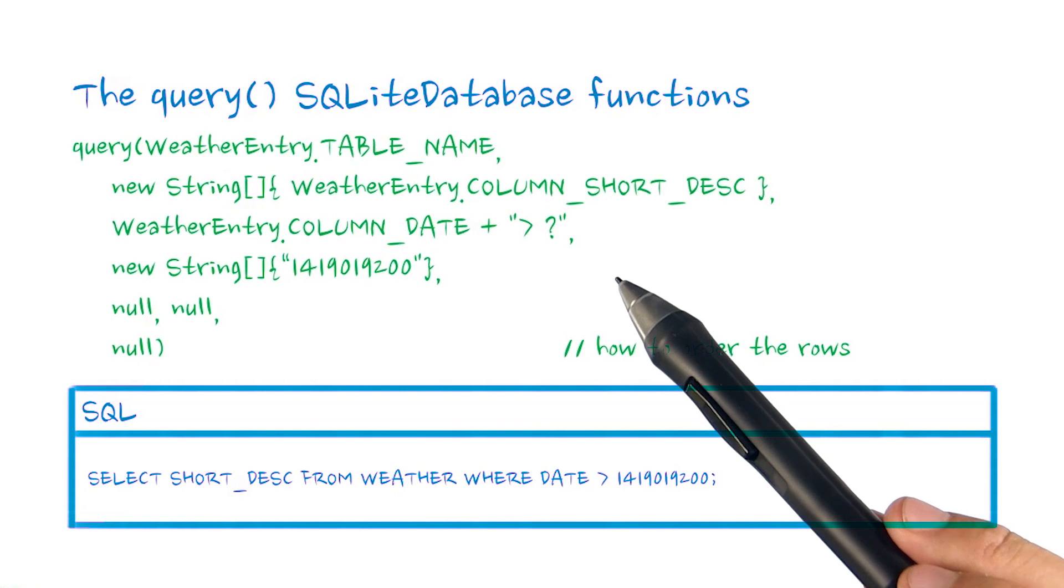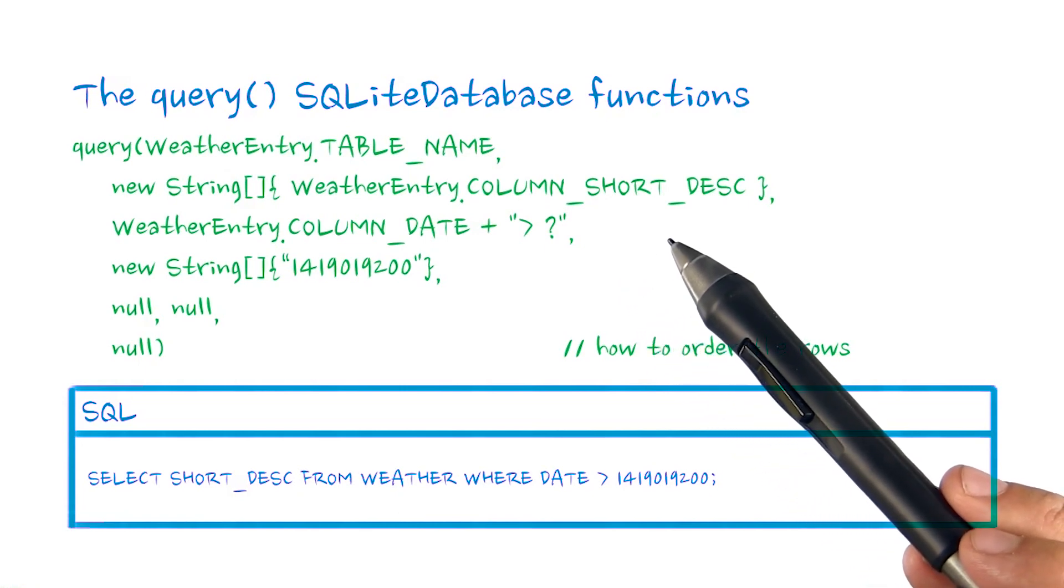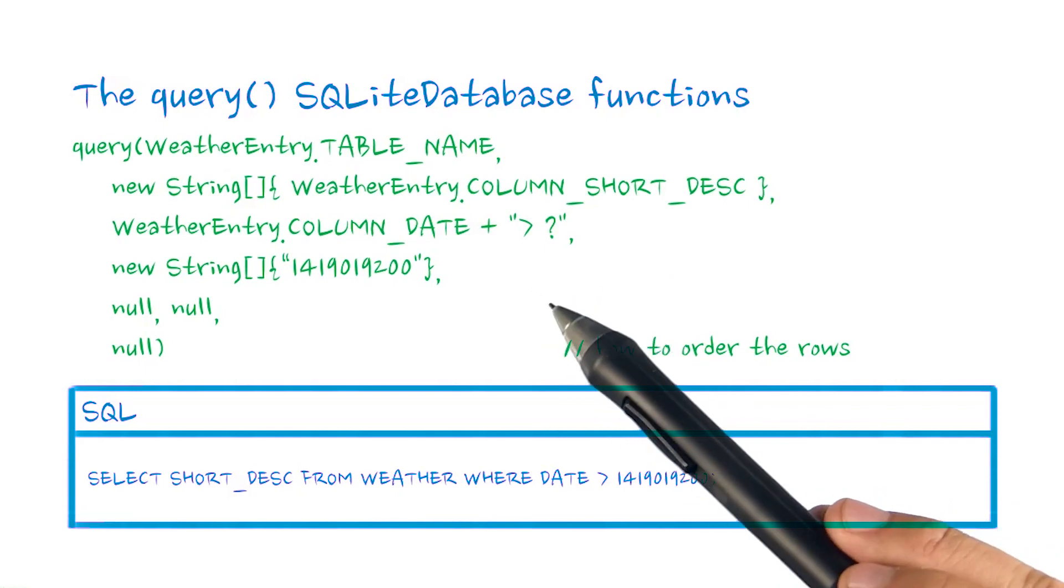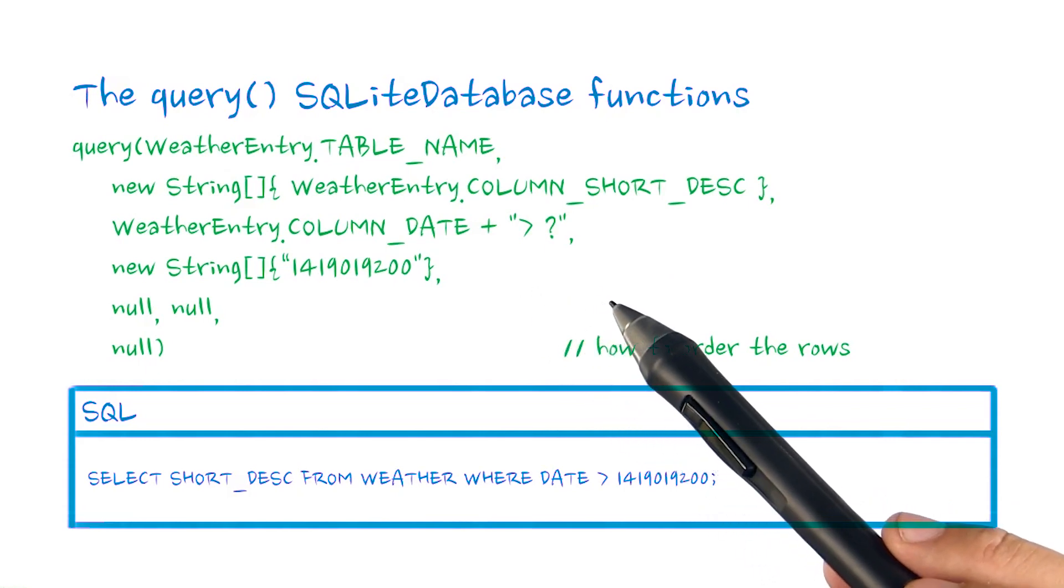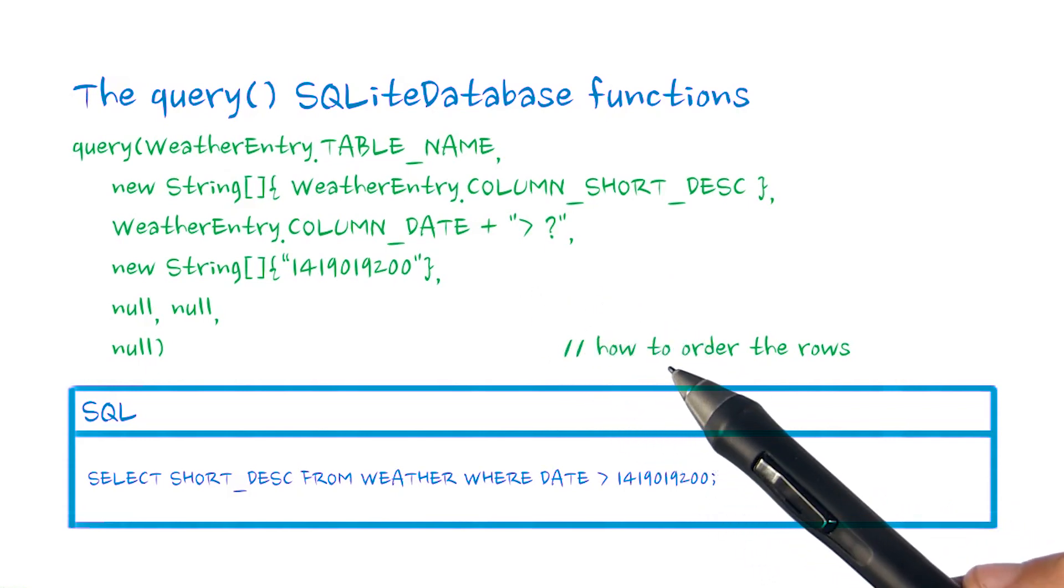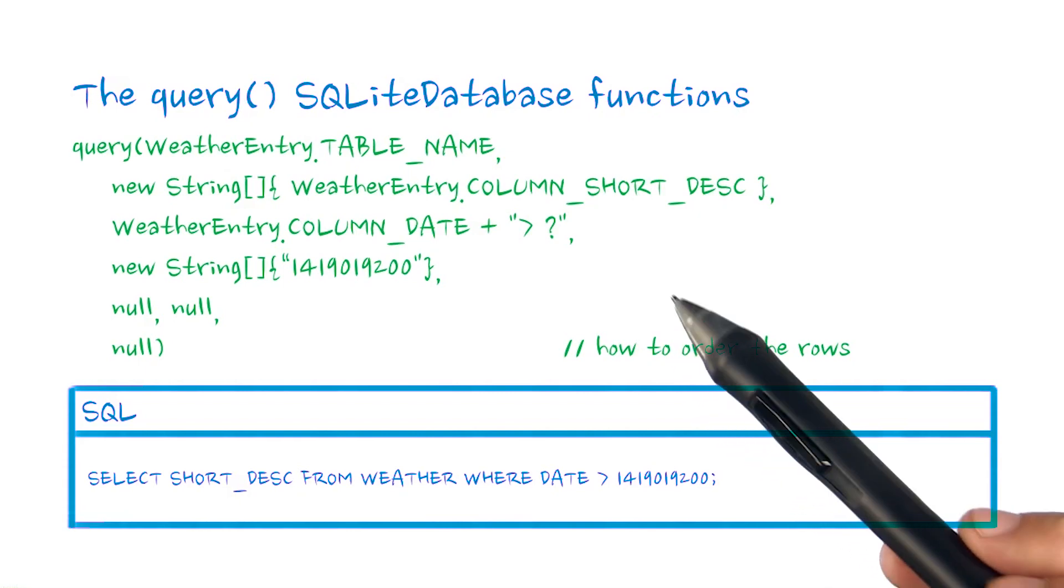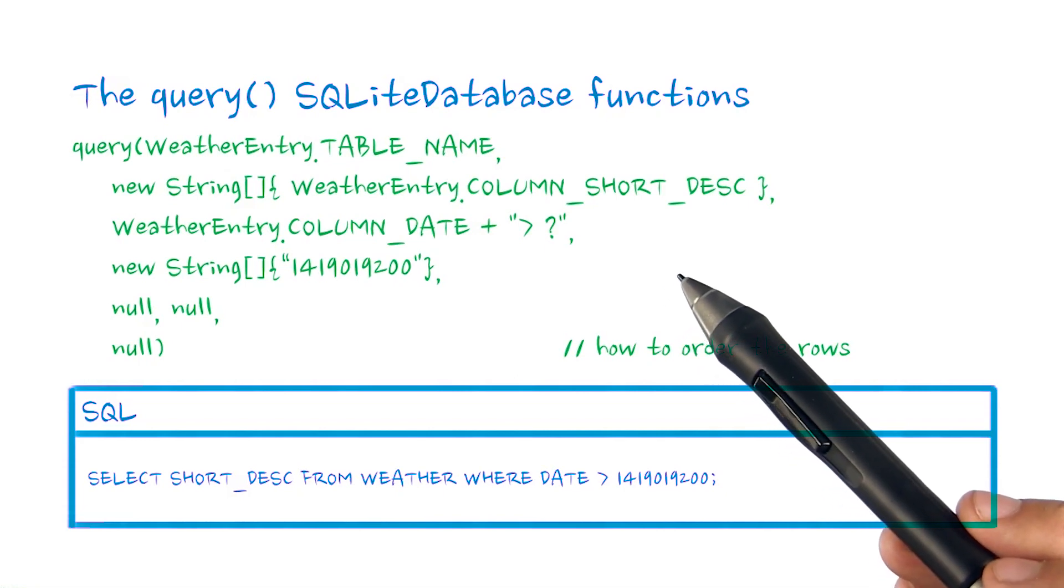The selection parameter filters the results. One can optionally also use the selection arguments to replace any question marks in the query. Android creates these as bound parameters in a low-level interface to SQLite, which means we don't have to worry about things like escaping the strings to keep the query valid. We can also change the selection arguments after our query has been made this way.